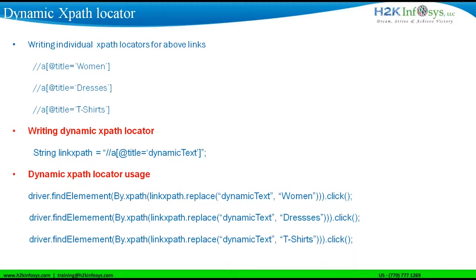So in this case, you don't need to really write three XPath locators to identify those links. Using a dynamic XPath locator, you can write a single XPath and use it for all three links. In the second section here, I created a dynamic XPath, which is: string linkXPath equal to //a[@title='dynamicText'].